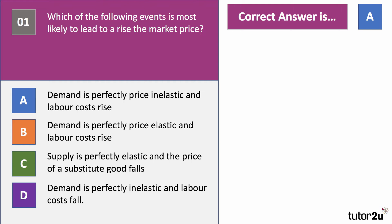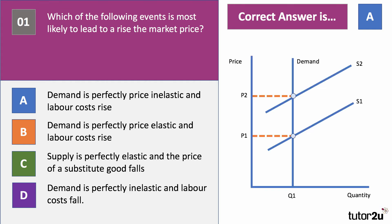Labour costs going up causes an inward shift of the supply curve. The supply curve shifts from S1 to S2. If you have a perfectly inelastic demand curve, then the equilibrium price will rise by the full amount from P1 to P2. B — demand is perfectly elastic — there'll be no change in price. C — supply perfectly elastic — and the price of a substitute falls, which would cause a downward shift in demand, not an increase in price. And D — labour costs going down — that would cause price to fall.